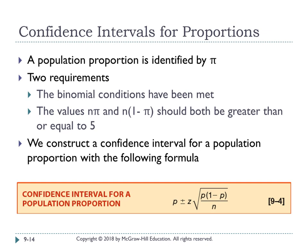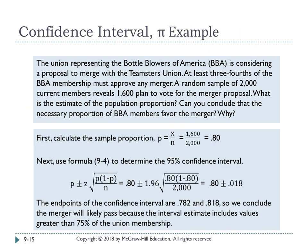The population proportion is identified by pi. To use the confidence interval formula for population proportion, two requirements must be met: the binomial conditions must be satisfied (two possible outcomes, constant probability of success, independent trials), and both n times pi and n times (1 minus pi) must be greater than or equal to 5. The formula is: p plus or minus z times the square root of p times (1 minus p) over n.